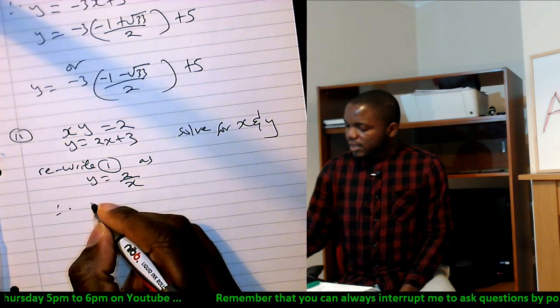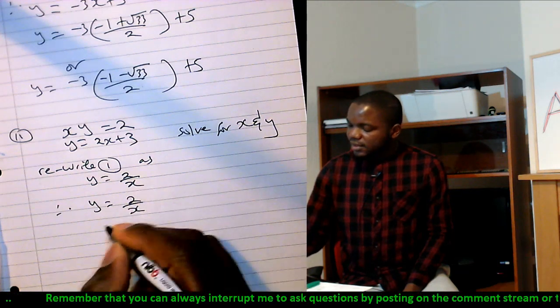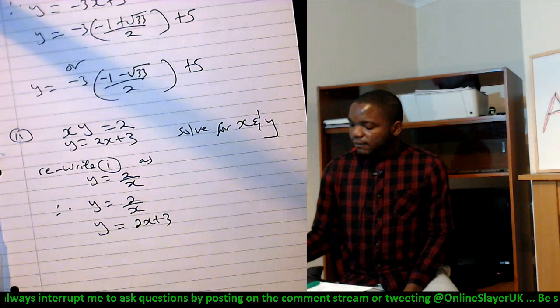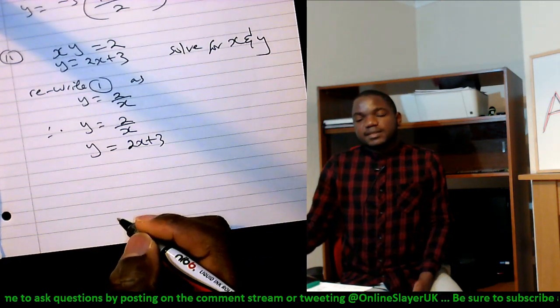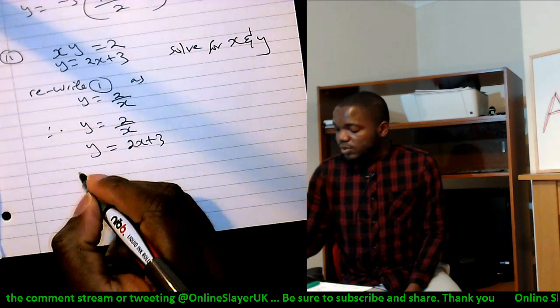Therefore, we have y which is 2 over x and you have y which is 2x plus 3. To solve this simultaneous equation means that equate the two or subtract this from the other one, which simply means 2x plus 3 is equal to 2 over x.